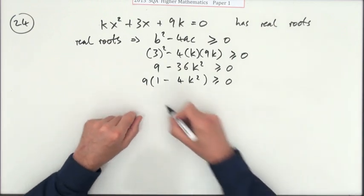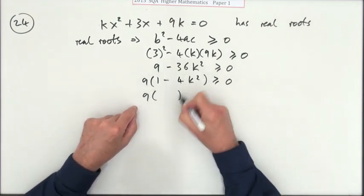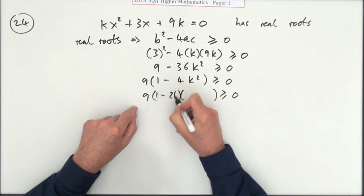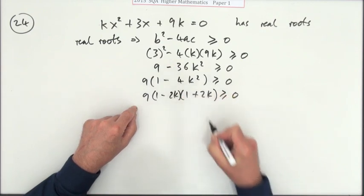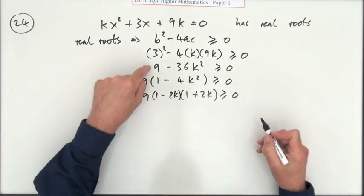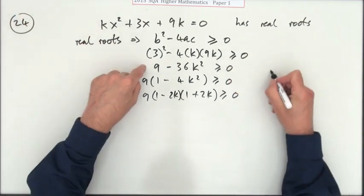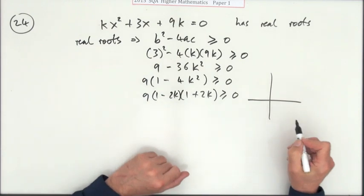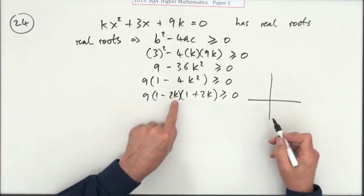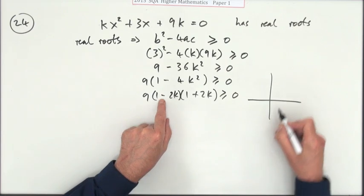So I'm actually going to factorize this. That'll be (1 - 2k)(1 + 2k). The reason for that is I want to know when this expression, or a ninth of it, it's the same thing, is greater than or equal to zero. So this says when k is a half.